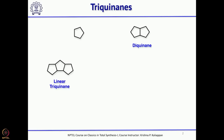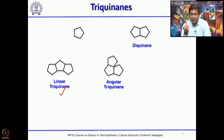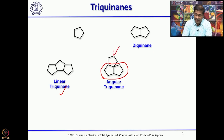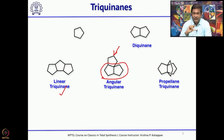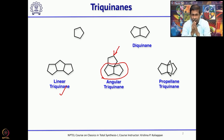If 3 five-membered rings are fused, there are 3 possibilities. If they are fused in a linear fashion, they are called linear triquinines. If you add one more 5-membered ring in an angular fashion onto the diquinine, they are called angular triquinines. And if the third 5-membered ring is attached so that they look like a propellane, that is the third category: propellane-type triquinines.